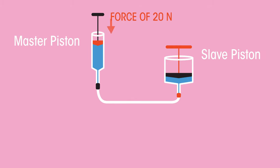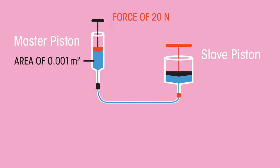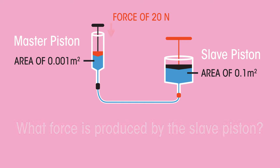A force of 20 newtons is applied to the master piston, which has an area of 0.001m². The slave piston has a surface area of 0.1m². What force is produced by the slave piston?